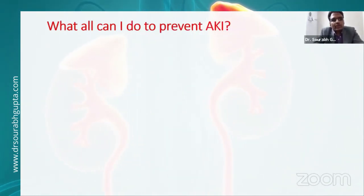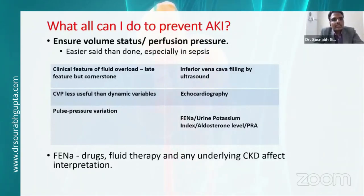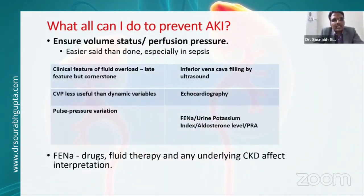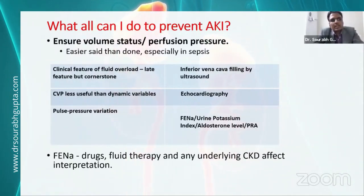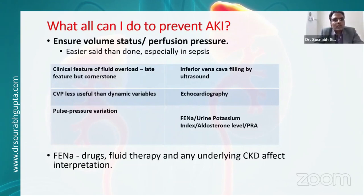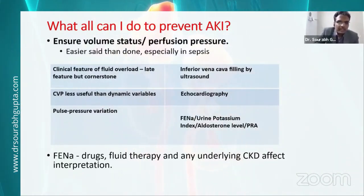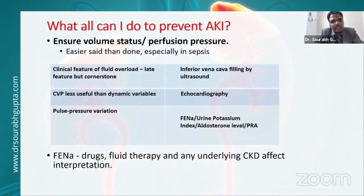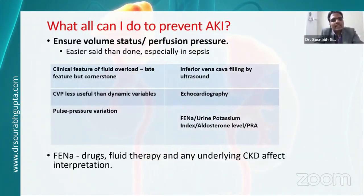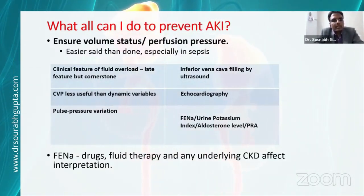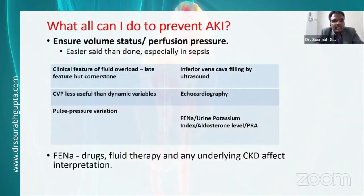To prevent AKI in patients at risk, the most important step is assessing volume status and perfusion pressure — though easier said than done, especially in sepsis. Clinical features are the backbone but are late indicators. Multiple modalities can be used including inferior vena cava by ultrasound, CVP analysis as static measurements, and dynamic measurements like echocardiography, pulse pressure variation, and lung comet sign on USG to understand intravascular volume status.